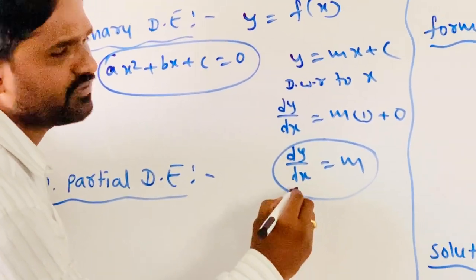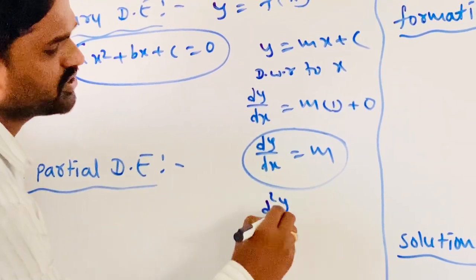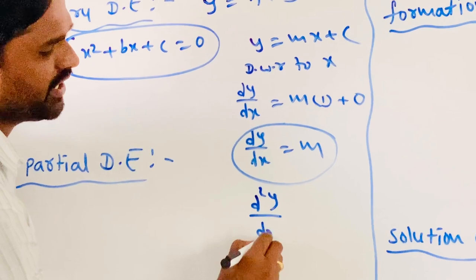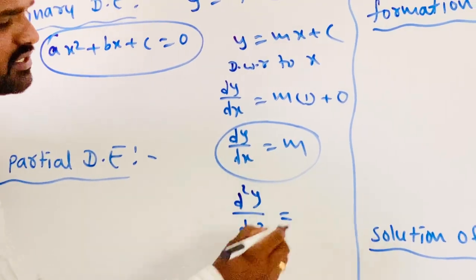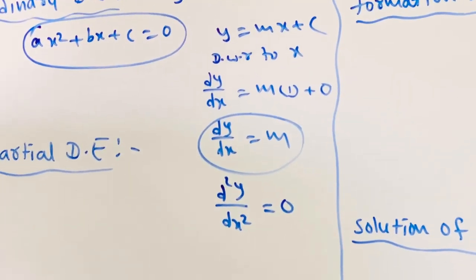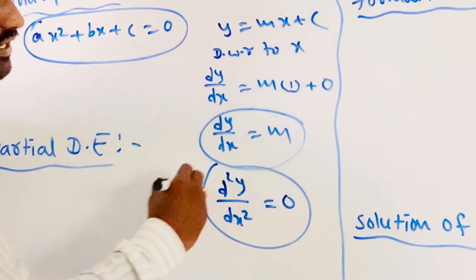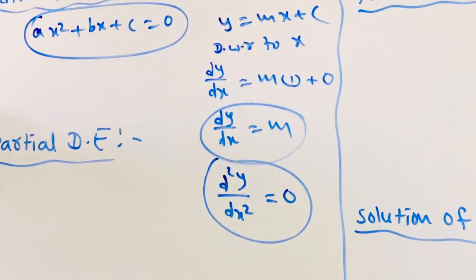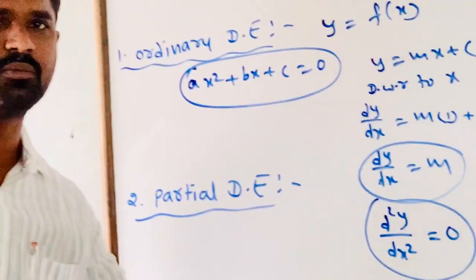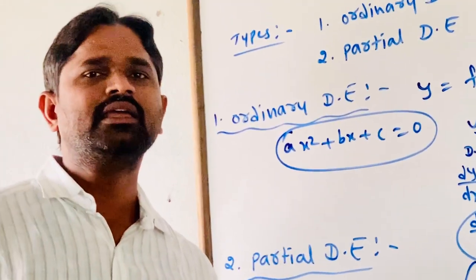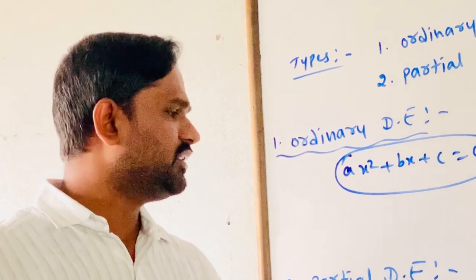Again differentiating with respect to x, d square y by dx square — where m is a constant, its derivative is 0. Again differentiating, we will get a third order differential equation, and so on up to the nth derivative.